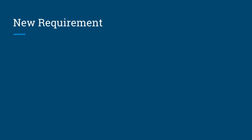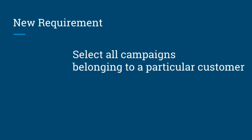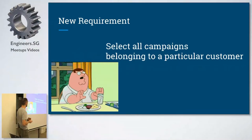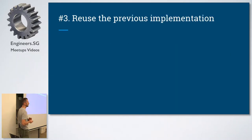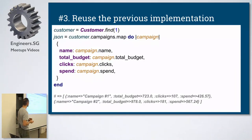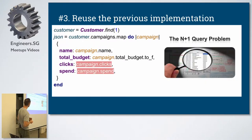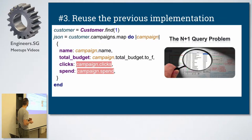Then a new requirement comes in — instead of selecting one campaign, we want to select multiple campaigns with similar output. We could just reuse the previous implementation, mapping over all campaigns and doing the same thing. But we're doing something weird: for every campaign, we load all possible stats into memory, we do this multiple times, and it's an N+1 query — we do this for every campaign separately. We can deal with this using `includes`, which creates two nice SQL queries instead of N+1.